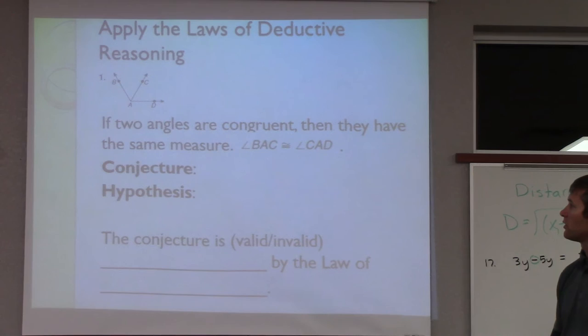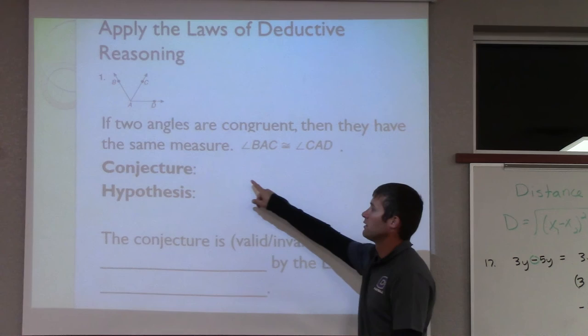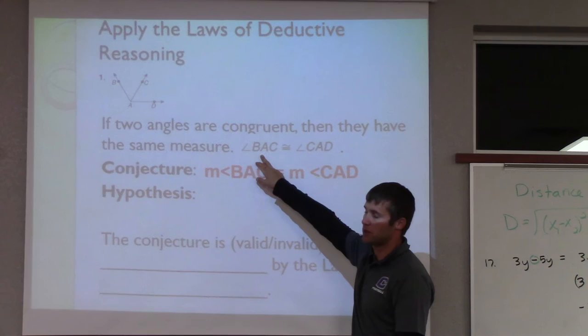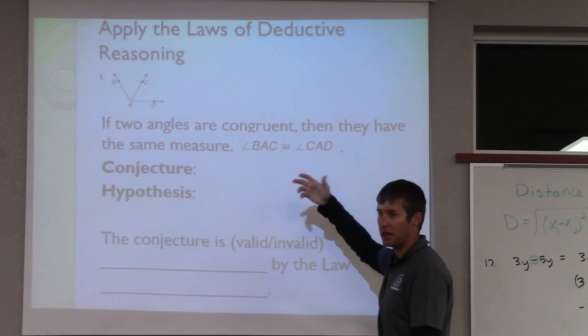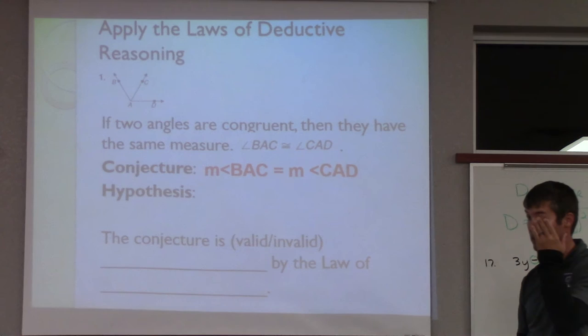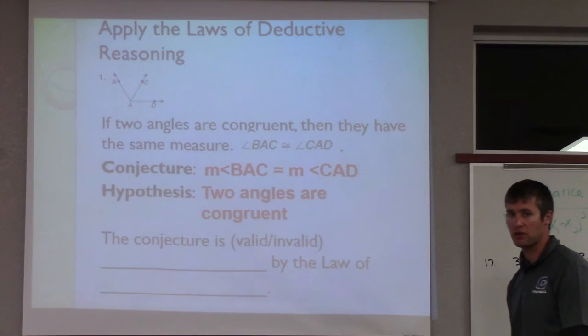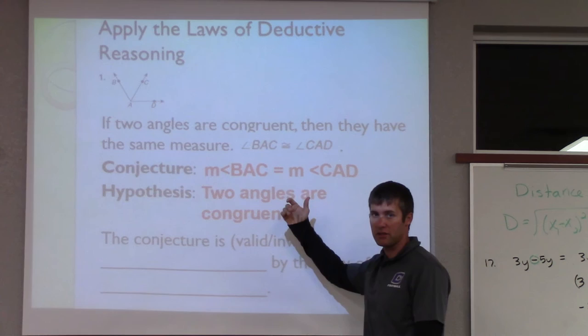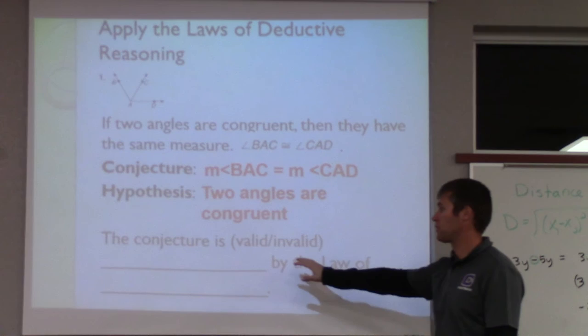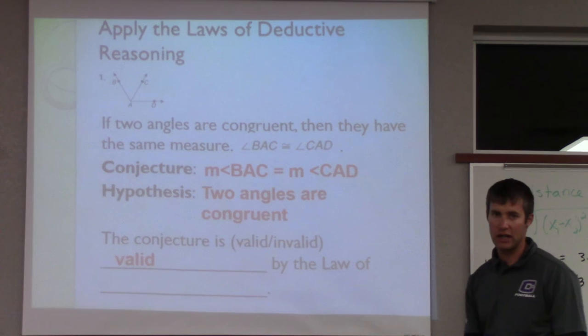If two angles are congruent, then they have the same measure. Our conjecture: angle BAC and angle CAD are congruent, so their measures are the same — the measure of BAC equals the measure of CAD. Our hypothesis is that two angles are congruent, which is given to us. Is it true that if two angles are congruent, they have the same measure? Yes. So this conjecture is valid by the law of detachment, since it's just an if-then statement.